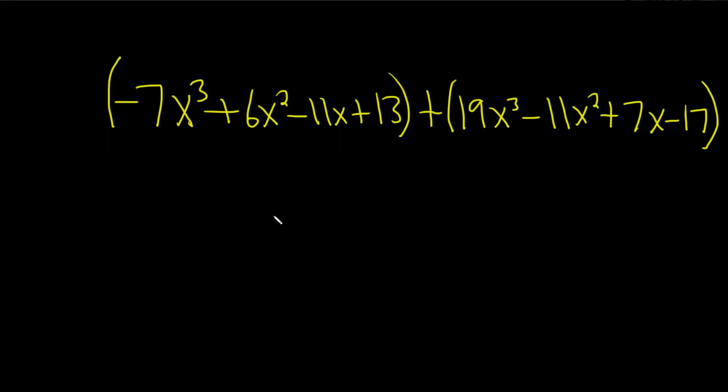In this problem, we have to add the polynomials, write in standard form, and indicate the degree. So first, let's do the addition. In this case, since we're adding, we don't need to worry about the parentheses. We can just add each of the like terms.